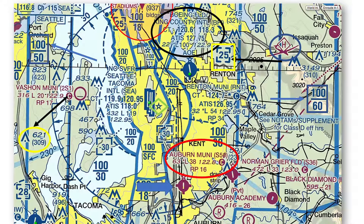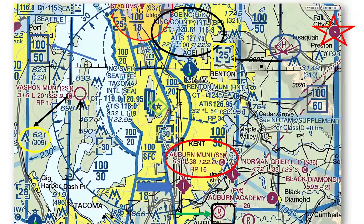Notice the letter R surrounded by a circle highlighted by the green arrow in the bottom of the chart. This symbol indicates the airport is a non-public private airport. The magenta circle for Vashon Municipal Airport indicates that it has a runway that does not have a hard surface. When you see these circles that are not filled in, this indicates the airport has a gravel, dirt, or grass landing strip.